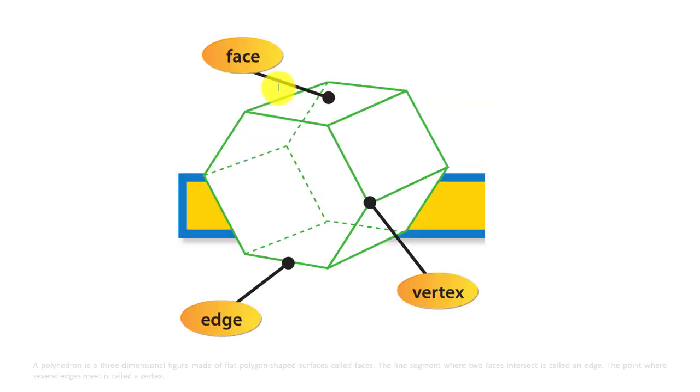A polyhedron is a three dimensional figure made of flat polygon shaped surfaces called faces. The line segment where two faces intersect is called edge of the polyhedron. The point where several edges meet is called vertex of the polyhedron.